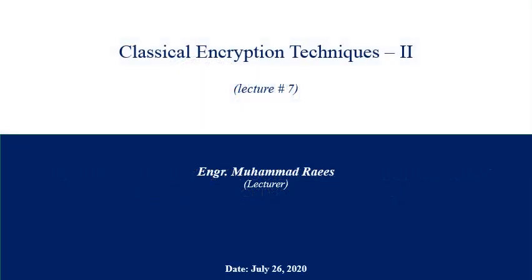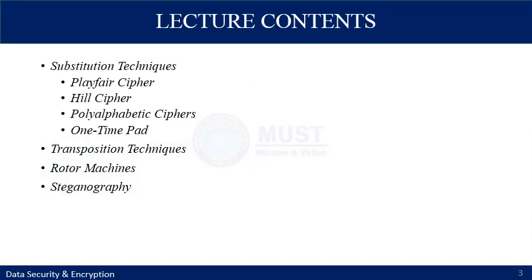Assalamu alaikum. This is lecture seven of data security and encryption. In this lecture we are going to continue from the previous lecture that was about the classical encryption techniques. In the last lecture we started with the symmetric cipher model, defined terms and definitions used in cryptography and data security, overviewed a model of cryptography, and defined the terms cryptanalysis and brute force attack. We discussed a couple of techniques to substitute the original message with a cipher text — the main techniques were Caesar cipher and mono-alphabetic cipher.